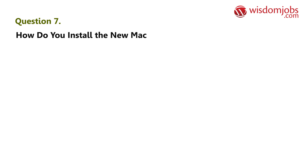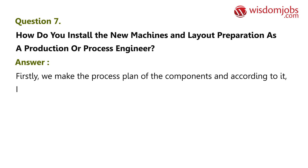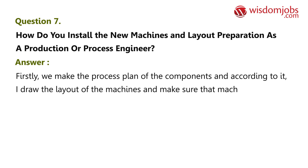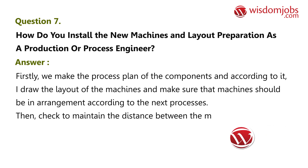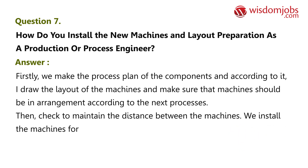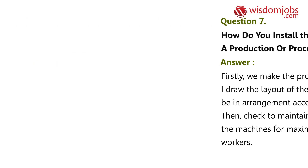Question 7: How do you install new machines and prepare layout as a production or process engineer? Firstly, we make the process plan of the components and according to it draw the layout of the machines, making sure that machines are arranged according to the next processes. We then check and maintain the distance between the machines, install the machines for maximum time saving, and provide proper safety to the workers.